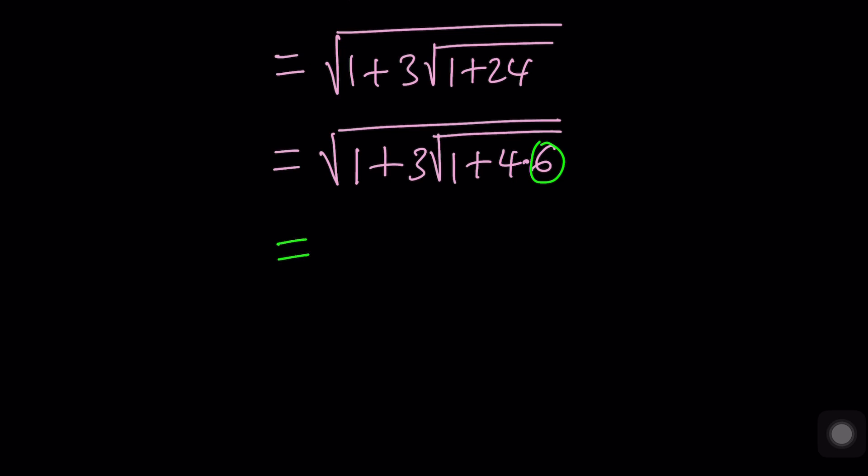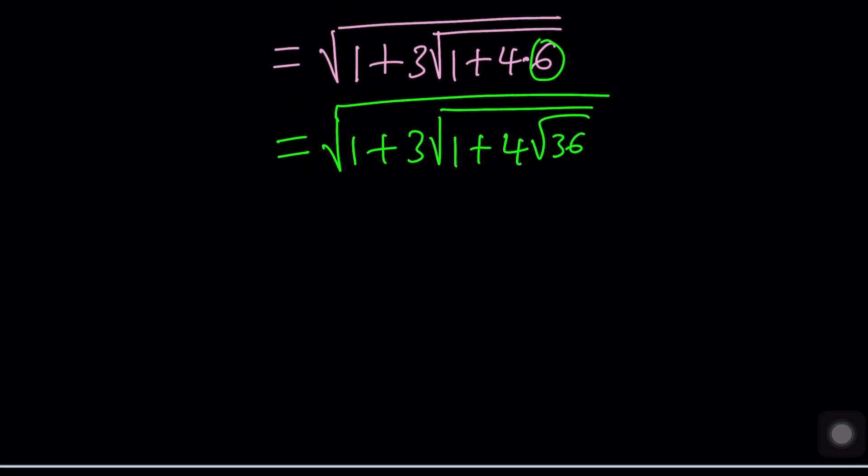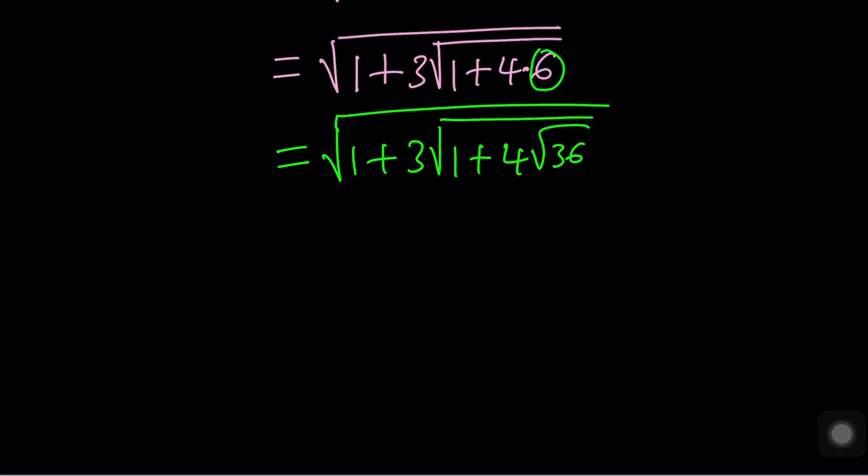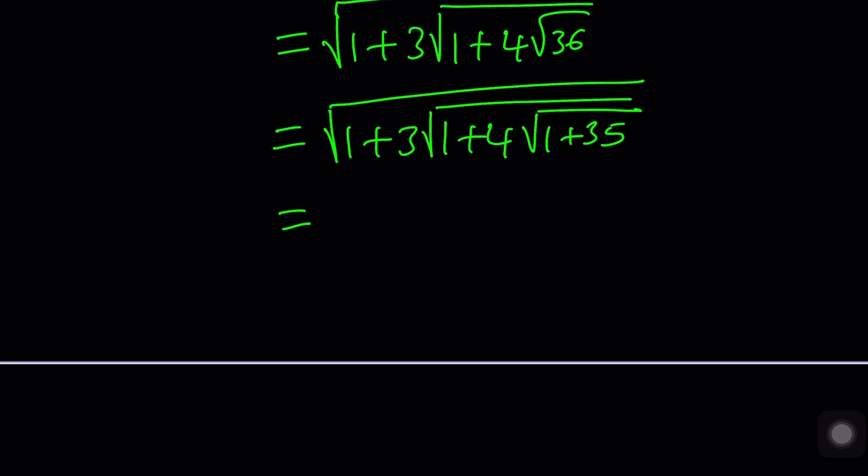Now here's the next thing. 6 is going to be written as the square root of 36, and then we're going to have more radicals. Obviously these are nested radicals, infinitely many, so we've got to keep doing this. And 36 will be written as 1 plus 35, which can be factored. Remember you must separate the 1 so the rest is factorable like that.